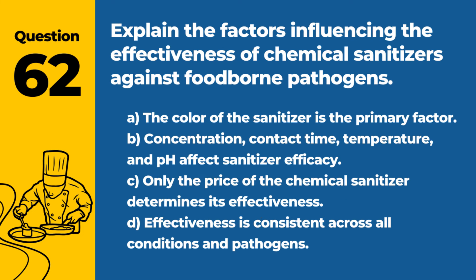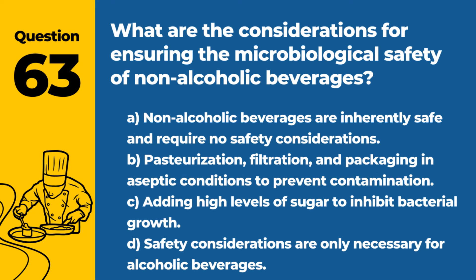Question 62. Explain the factors influencing the effectiveness of chemical sanitizers against foodborne pathogens. a. The color of the sanitizer is the primary factor. b. Concentration, contact time, temperature, and pH affect sanitizer efficacy. c. Only the price of the chemical sanitizer determines its effectiveness. d. Effectiveness is consistent across all conditions and pathogens. Answer: b. Concentration, contact time, temperature, and pH affect sanitizer efficacy. Understanding these factors is essential for proper sanitizer use in food safety practices.